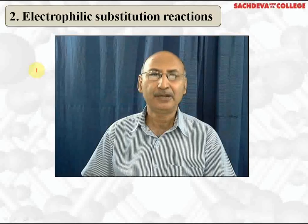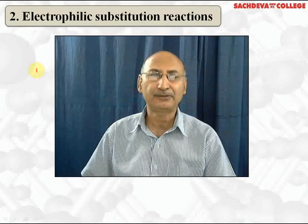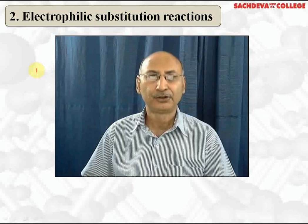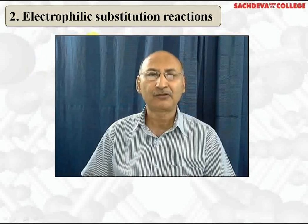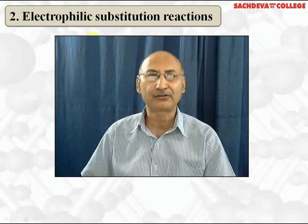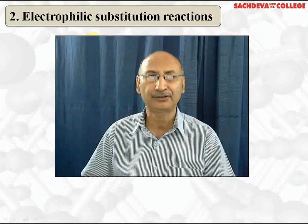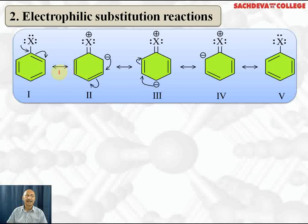Let's take up electrophilic substitution reactions. Those reactions in which one electrophile replaces another electrophile are called electrophilic substitution reactions. Halogen group, although electron withdrawing, is still ortho-para directing. We are going to explain why.